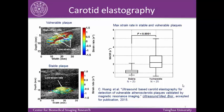Vulnerable plaques and stable plaques show different patterns of strain rate distributions, and maximum strain rates are found to be significantly higher in vulnerable plaques than in stable plaques. For additional details, this work has been accepted for publication in Ultrasound in Medicine and Biology.